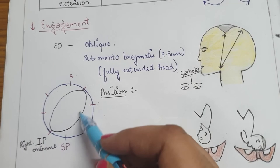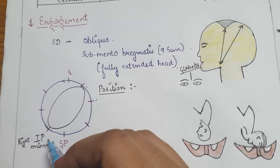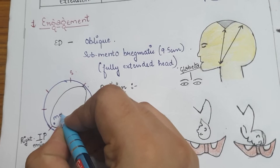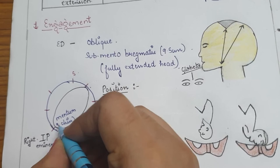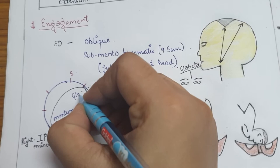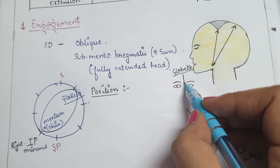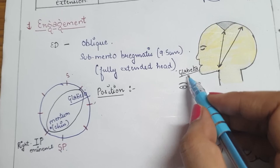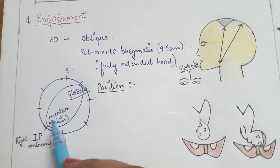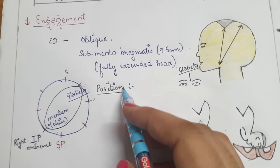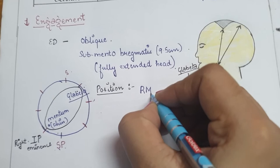In the diagram, the symphysis pubis is anterior, the sacrum is posterior, and the mentum or chin of the fetus is shown along with the glabella — the midpoint between the eyebrows. When the mentum lies in contact with the right iliopubic eminence, the position is known as right mento anterior.